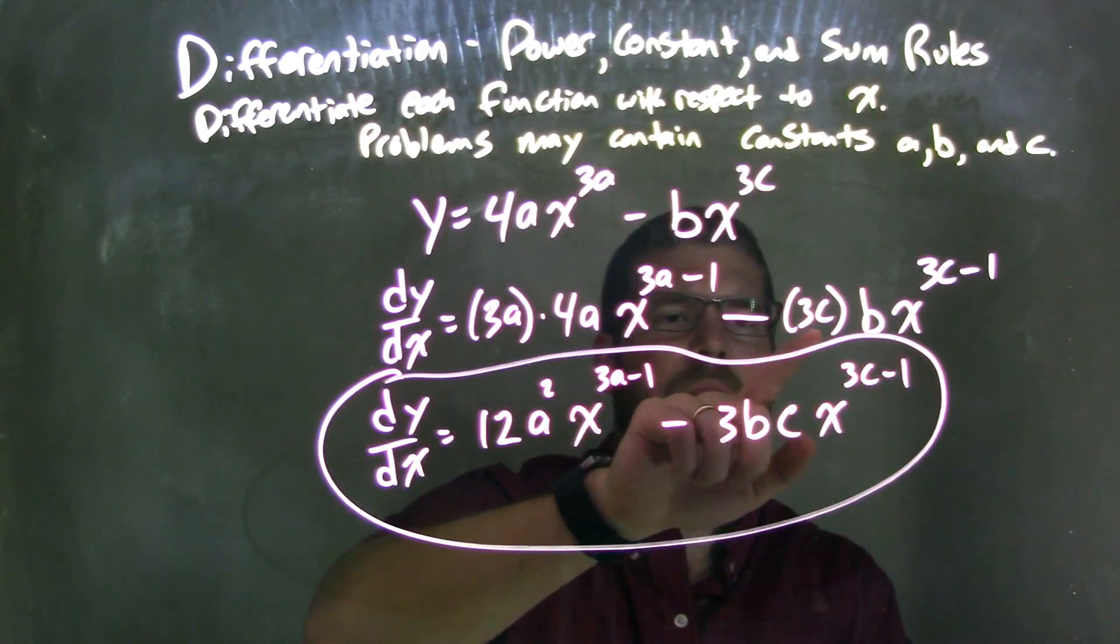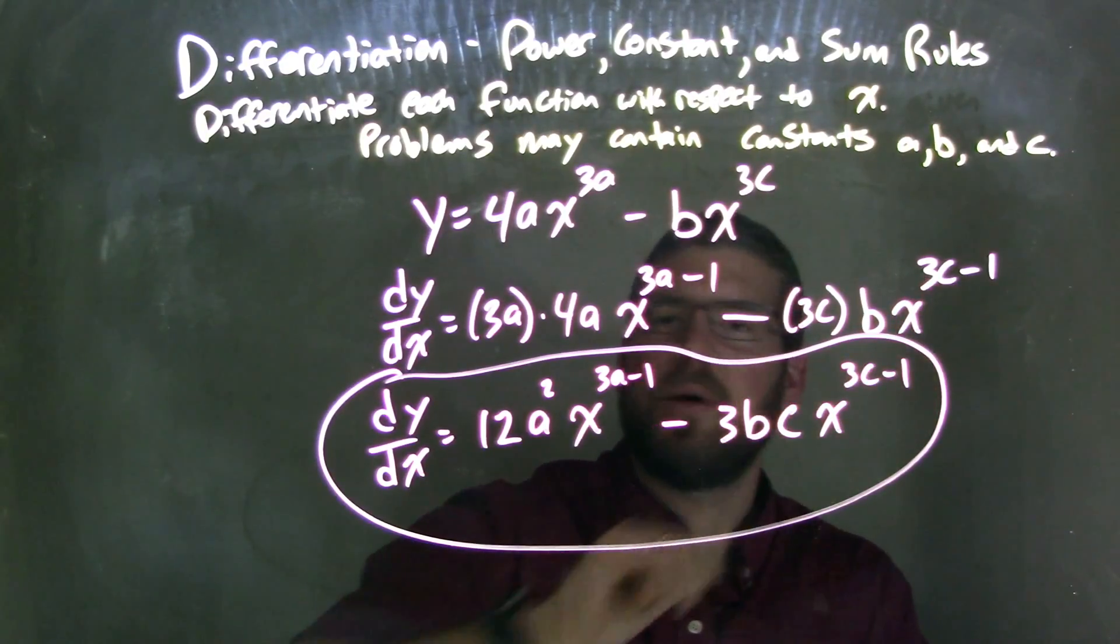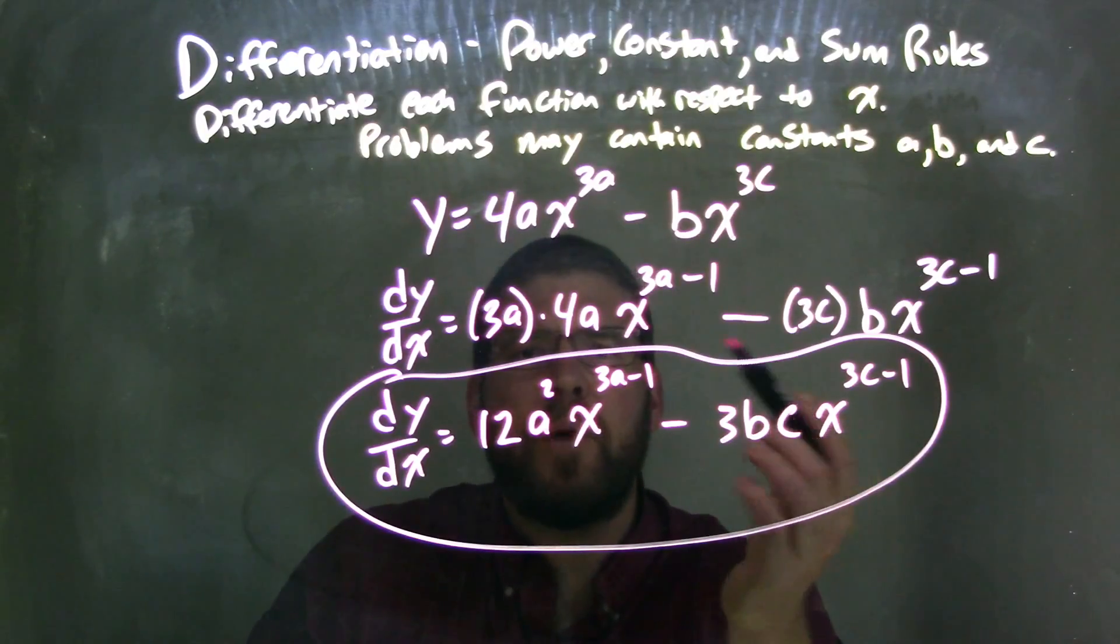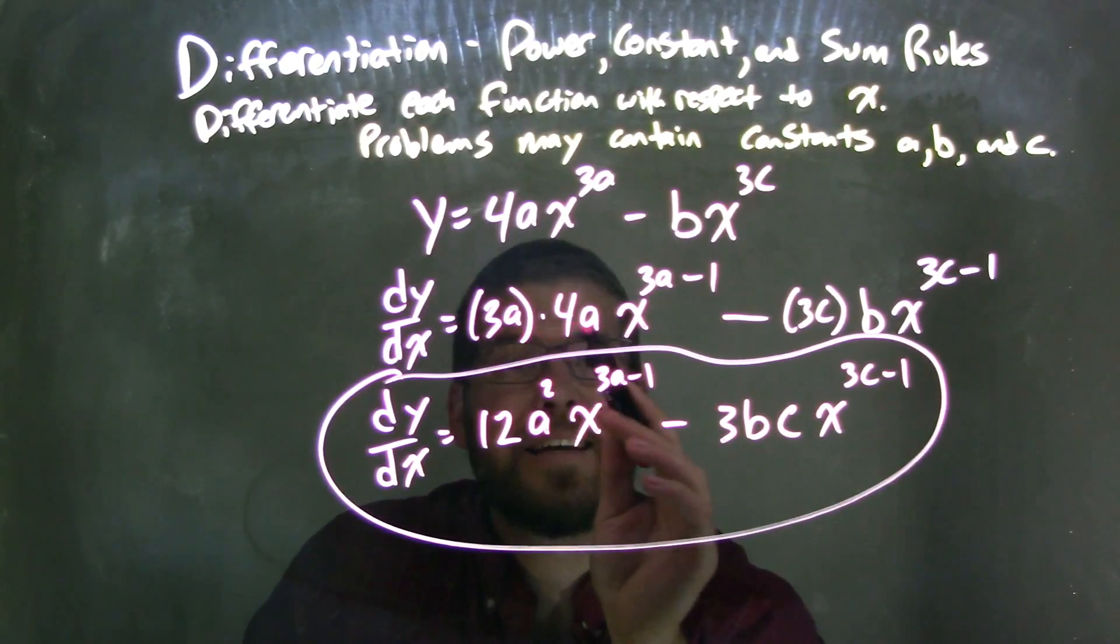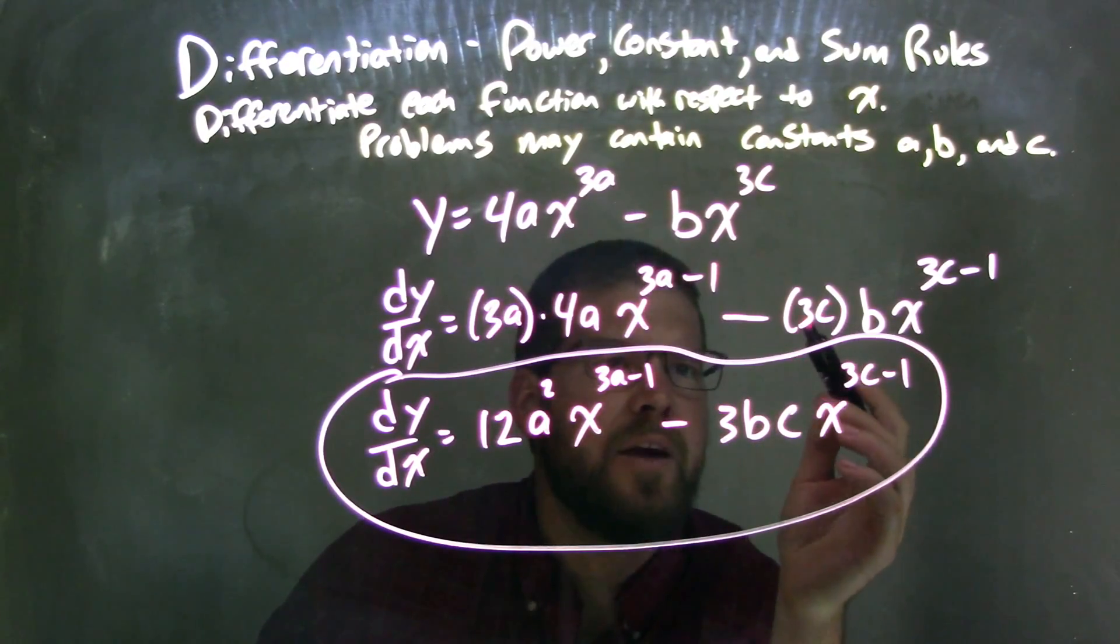and then I kept what's left, b times x, to the power of where 3c minus 1 was, where that constant's going to be. So then when I simplify, 3 times 4 was 12, a times a was a squared, and then we don't really know what 3a minus 1 is, so we kept that as the exponent. Same thing here.